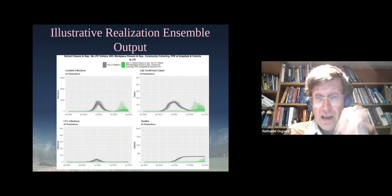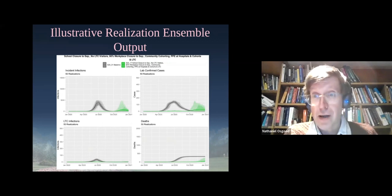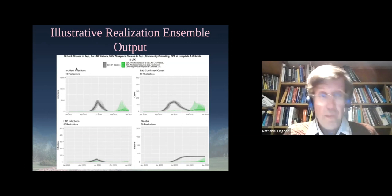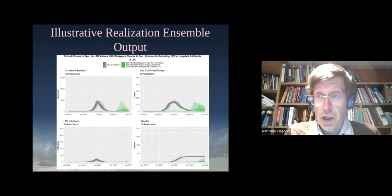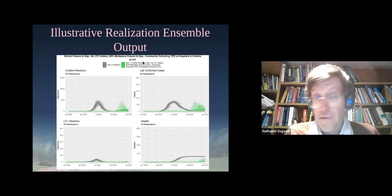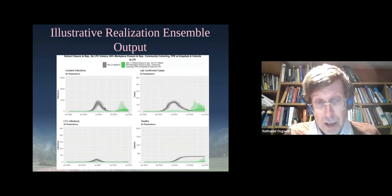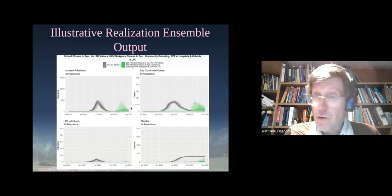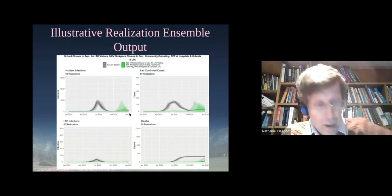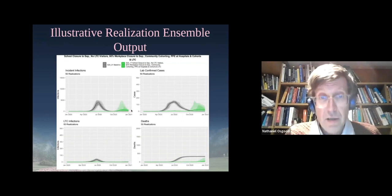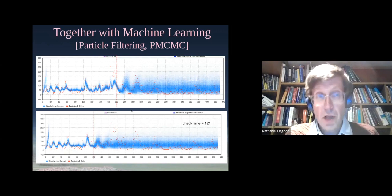We were looking at the quantitative impact of school closure to September, no long-term visitors, 90% workplace closure, community cohorting facilities for people to isolate away from their homes, and widely available PPE such as masks at hospitals, cohort facilities, and long-term care. What could we expect from a baseline scenario where we did nothing versus a scenario where we intervened with all of these measures in place? You could see there was some chance of a bigger outbreak in the fall, but we could really bring down the likely size of that outbreak. I also model to anticipate what's coming — this is much more effective with machine learning or a model that's constantly recalibrated.